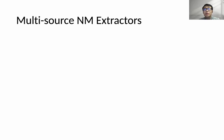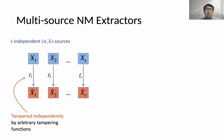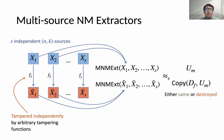In this work, we introduce a new notion called multi-source non-malleable extractor, which is the generalization of the two-source one. Instead of two sources, now we have s independent (n,k)-sources. Similarly, each source can be tampered independently by arbitrary functions, and we define security in the same way. However, this definition is actually weaker than the two-source one, since we can build such a multi-source non-malleable extractor by just applying the two-source non-malleable extractor to the first two sources and ignoring the rest.